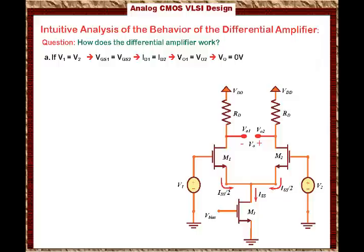To reiterate: if V1 equals V2, then Vgs1 is the same as Vgs2, then the current through M1 is equal to the current through M2, then Vout1 equals Vout2, and the differential output is 0. So if the differential input is 0 — if V1 equals V2 — then Vout equals zero and the differential voltage is equal.